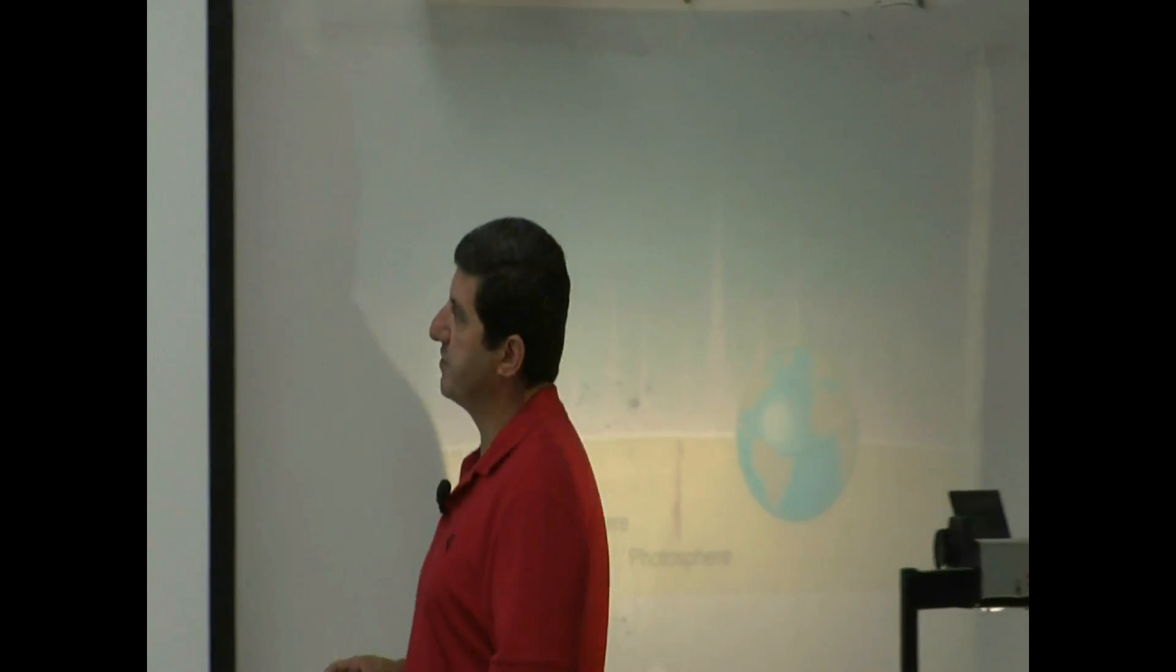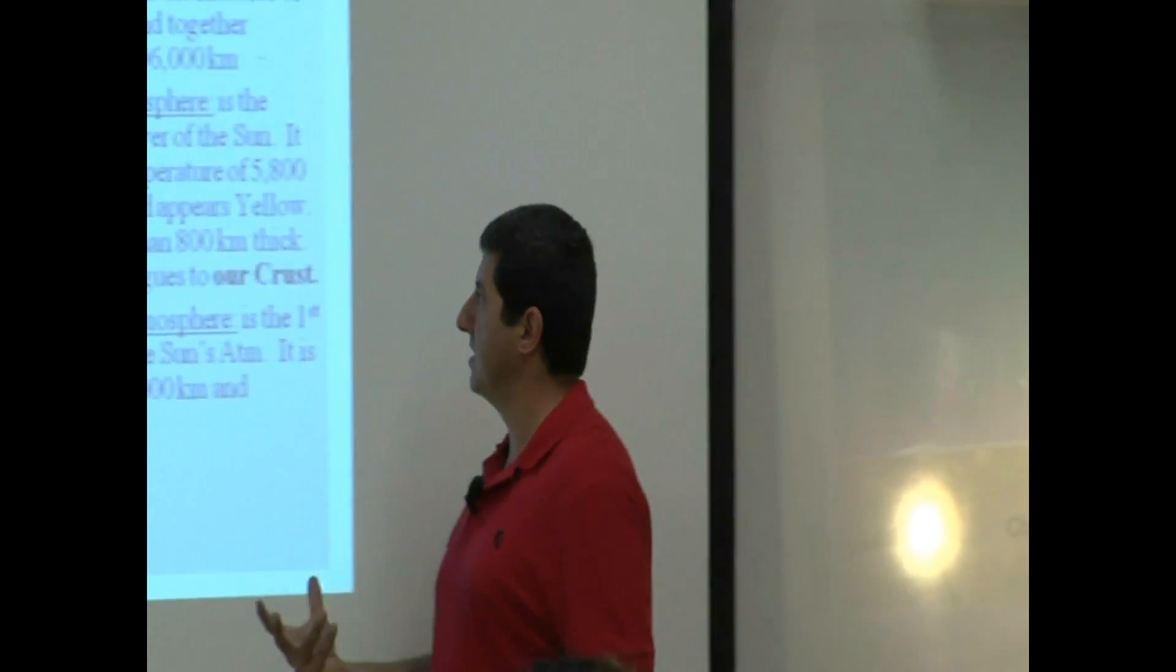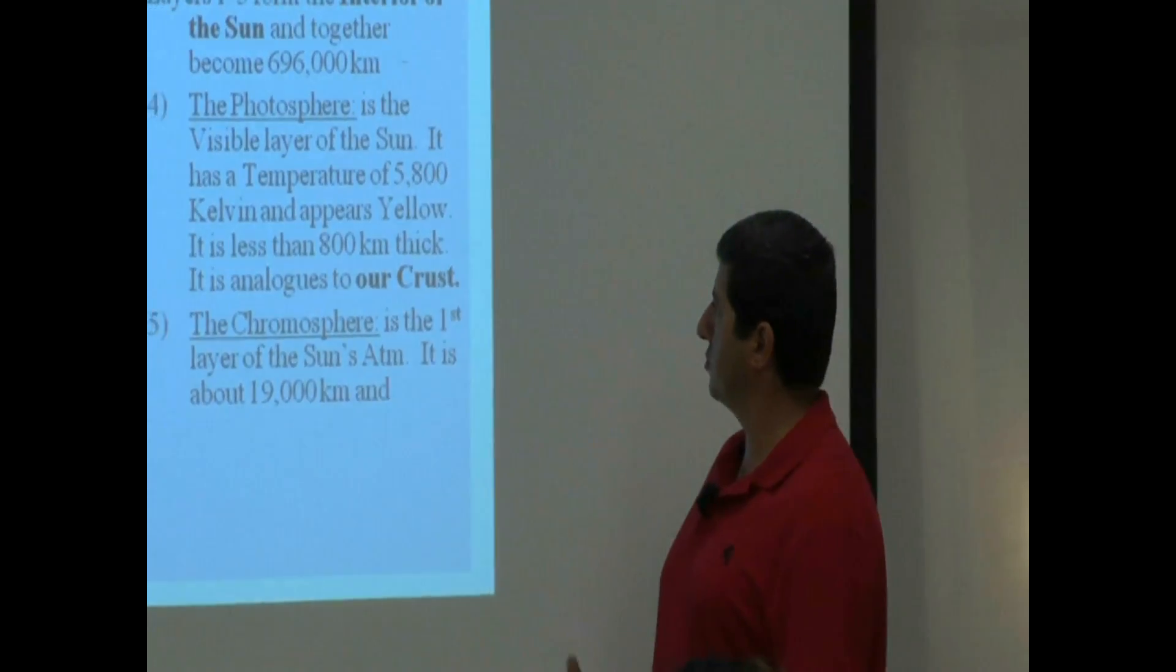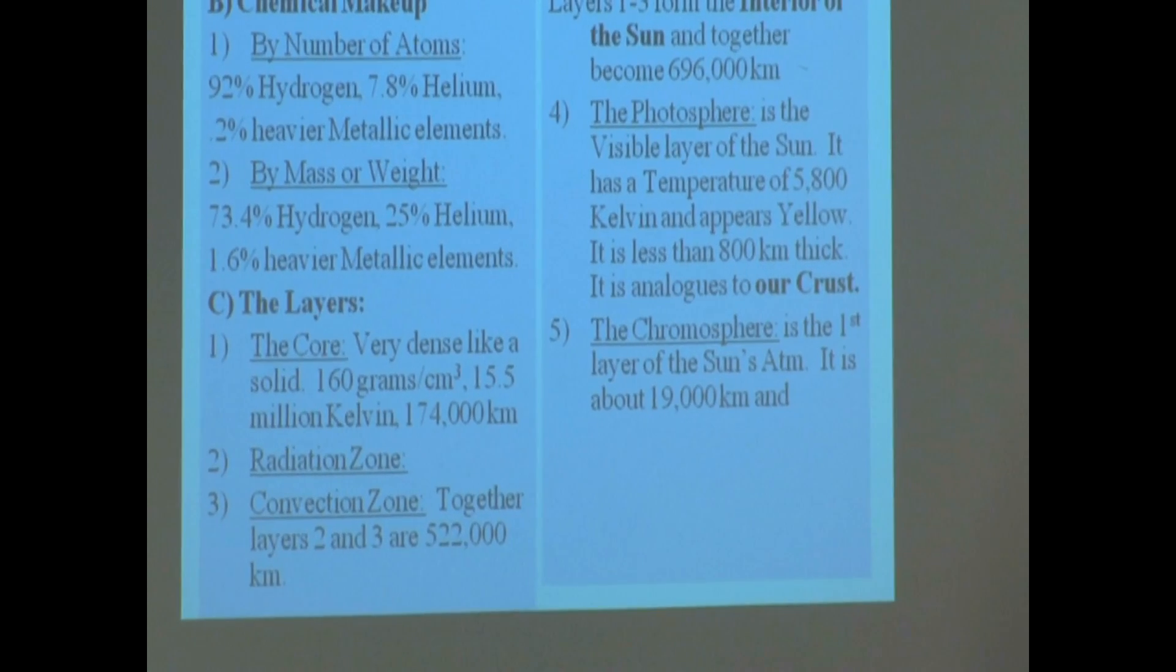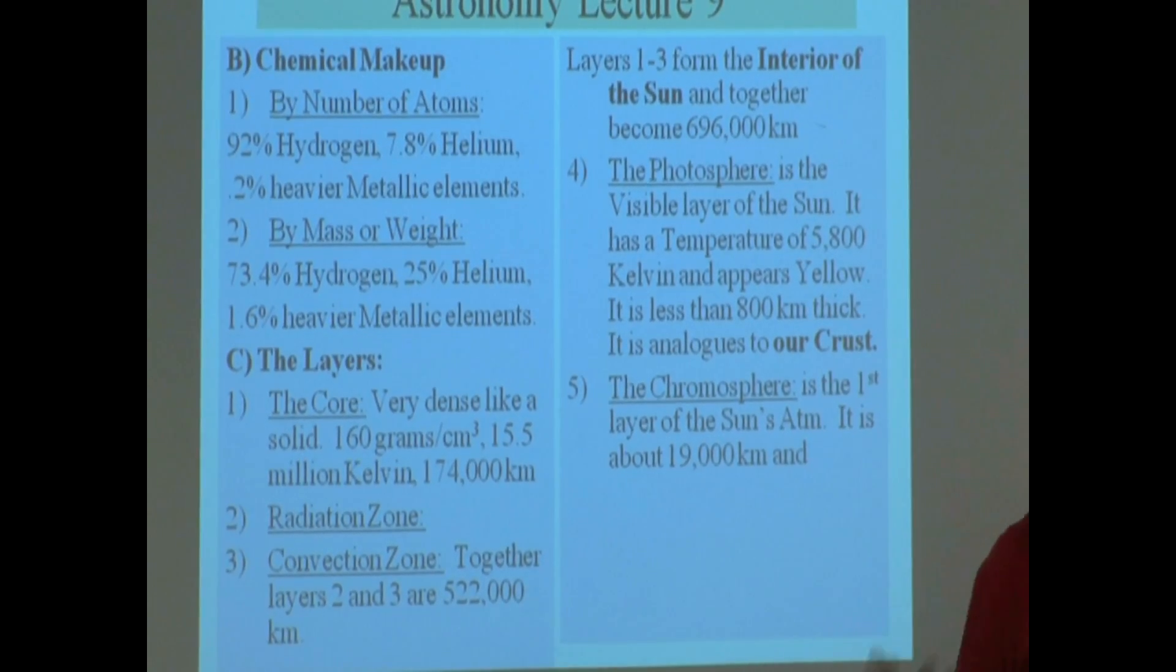So the photosphere is the visible layer of the sun. It has a temperature of 5,800 kelvins and appears yellow. It is less than 800 kilometers thick, and it is analogous to our crust.